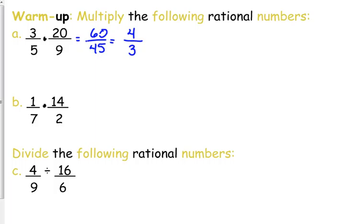You could have also gotten this by looking at this as 3 times, I'm going to split 20 up into 4 times 5, and I'm going to split 9 up into 3 times 3. Based on what we know about rational numbers, if we're multiplying, we can cancel common factors in the numerator and the denominator, and that is another way that you could have gotten to the answer of 4 thirds.